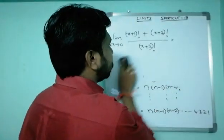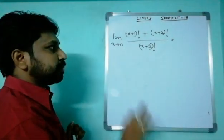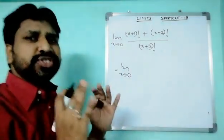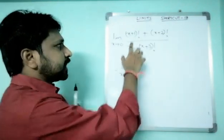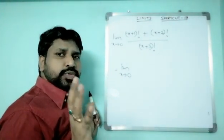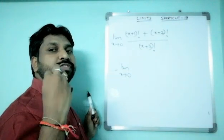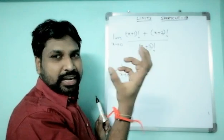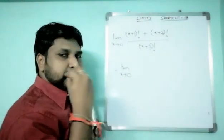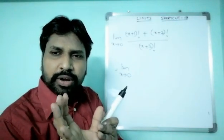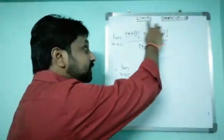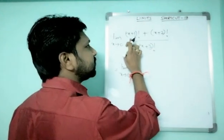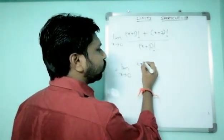Now look at this: limit x tends to 0 of [(x+1)! + (x+2)!] / (x+3)!. The small logic here is: identify the highest value and the least value. Among x+1 factorial, x+2 factorial, and x+3 factorial — if you take x=10, you get 11!, 12!, 13!, so 13! is the biggest. The least value is (x+1)!, so keep that as it is.